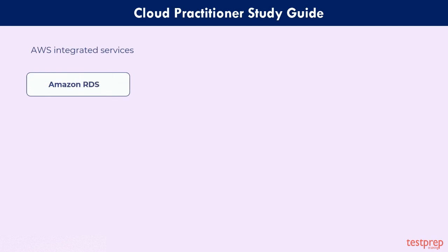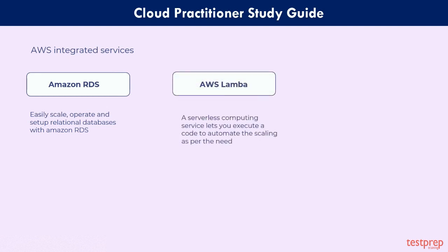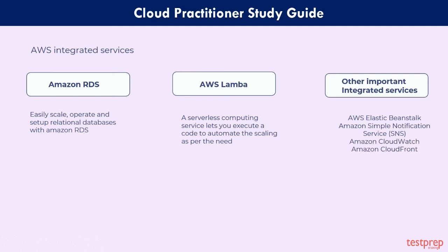Amazon RDS: easily scale, operate, and set up relational databases with Amazon RDS. AWS Lambda: a serverless computing service that lets you execute code to automate scaling as per need. Other important integrated services include: AWS Elastic Beanstalk, Amazon Simple Notification Service, Amazon CloudWatch, Amazon CloudFront, and AWS CloudFormation.